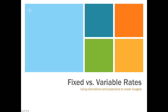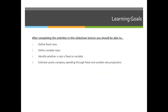Our next lecture is on fixed versus variable rates and how they apply to creating estimations and projections for printing prices. Our objectives for this lecture are to define what a fixed rate or fixed cost is, then define what a variable rate or cost is, and identify whether specific rates within a printing company — or any company really — is a fixed rate or a variable rate.